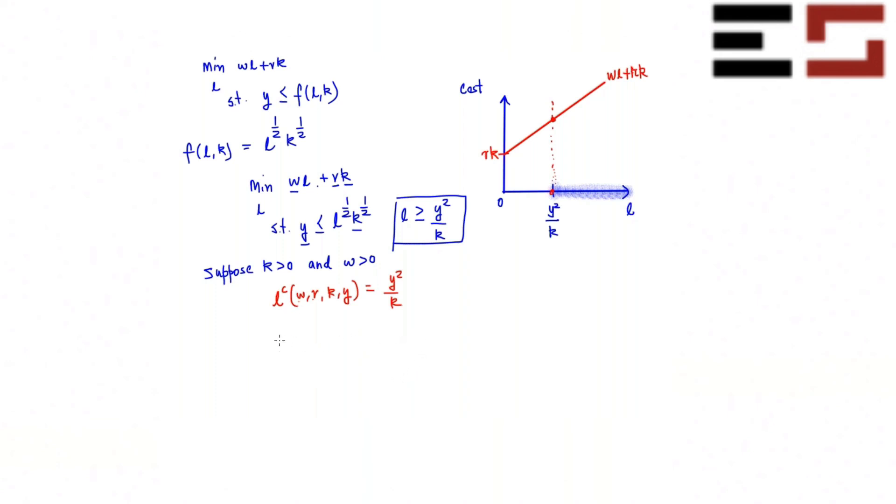So that's the short run conditional labor demand function. So how do you get the cost function, short run cost function? So short run cost function is also a function of W, R, K, Y and it is equal to W times the conditional labor demand function, the short run conditional labor demand function. Let me put an extra S here, just to say that this is short run conditional. And this is a short run cost. So this is W Y square by K plus R K. So that's your short run.